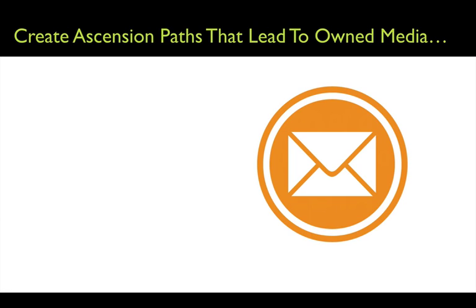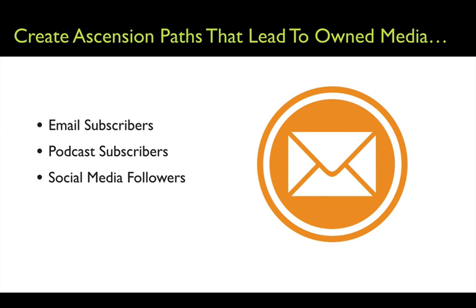Remember we talked about the intent-based search optimization model that starts with intent, then context, then asset, then channel, then optimization, then ascension. Create ascension paths that lead to owned media like email subscribers, podcast subscribers, and social media followers. You want to take even your organic search traffic — people finding you through Google, Amazon, or TripAdvisor — and build ascension paths toward owned media.